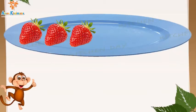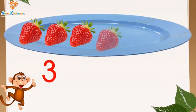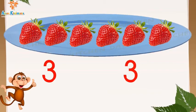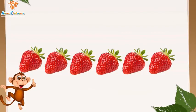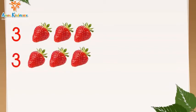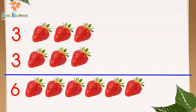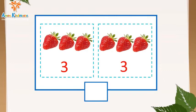Ở đây cô có đĩa dâu. Trong đó cô có 3 quả dâu. Sau đó cô thêm vào 3 quả dâu nữa. Hỏi rằng lúc này cô có tất cả bao nhiêu quả dâu? Vậy là 3 quả dâu thêm 3 quả dâu nữa bằng 6 quả dâu.